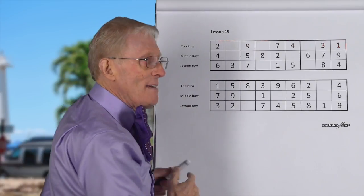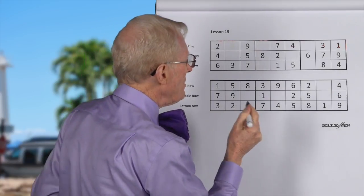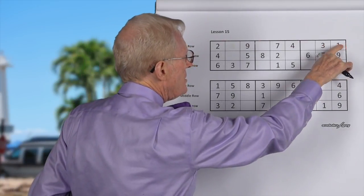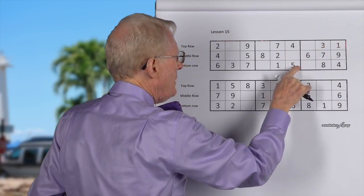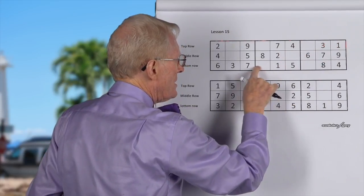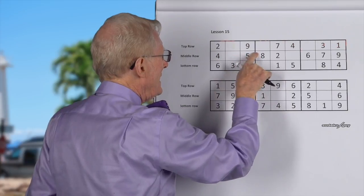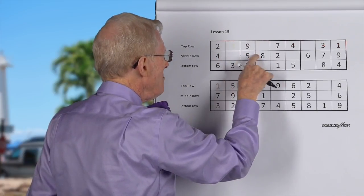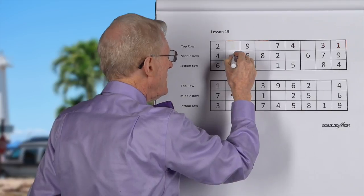So let me demonstrate to show you how it works. Let's start with one. Here's one on the top row of that block. Here's one on the bottom row of this block. Therefore, in this block, it has to be in the middle row. So that's where the one goes.